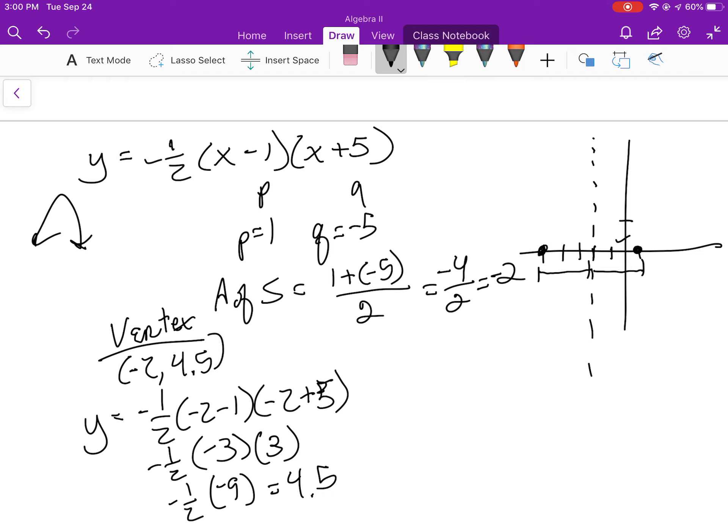So at negative 2 I'd go up to 4.5. There's my vertex, there it opens down, and by the way since it's one half it's going to be wider than your typical graph.